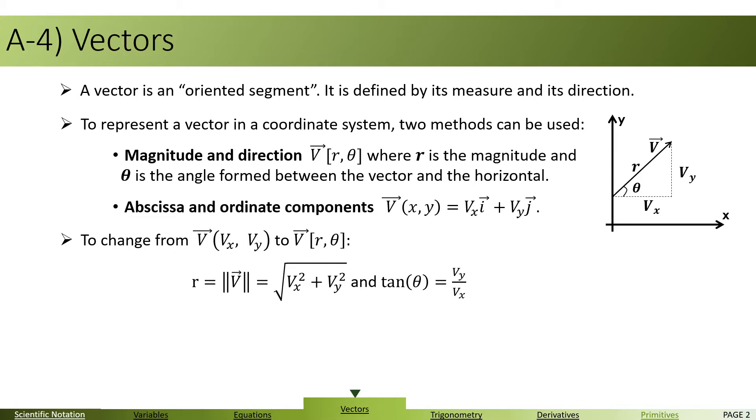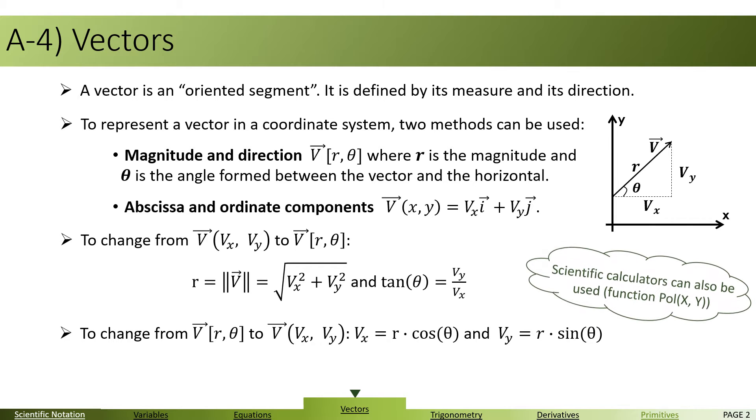By convention, theta is taken as the angle with the X axis, or the horizontal. To move backwards, changing from polar, or R theta, to Cartesian, keep in mind we can use trigonometry, in which Vx